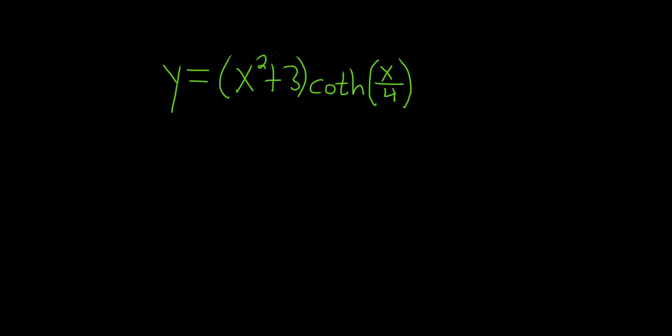Find the derivative of x squared plus 3 times the hyperbolic cotangent of x over 4. We're going to use the product rule to find the derivative here.